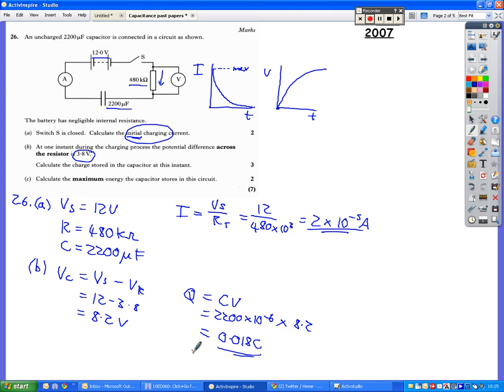So three marks just for a relatively simple calculation. Part C. Calculate the maximum energy the capacitor stores in this circuit. So energy is really a measure of how much charge it's holding, how much voltage it has across it. So when the energy is at maximum, that's going to be when it's fully charged.